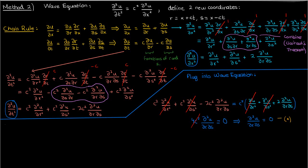So we'll have the mixed partial of u with respect to the transformed variables r and s equal to 0. Now this equation is much more simple to solve. Let's integrate both sides of this expression with respect to r first. When we integrate with respect to r, we get du/ds on the left because we've integrated the r out, and we'll get a constant on the right that I'll call h, because the integral of 0 is just a constant. But this h isn't just any constant — it's a constant function in the variable r. So in general, we could say that h is a pure function of s.